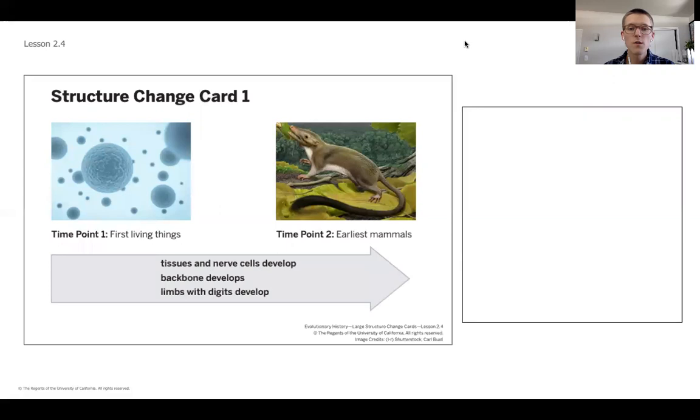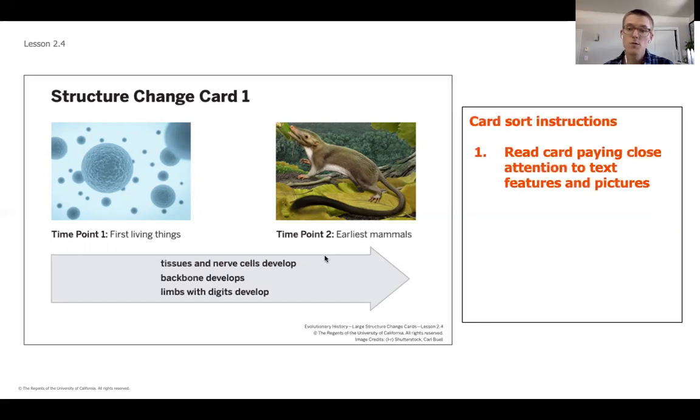This is the first card. So the first card says that we've got the first living things, earliest mammals, and then there's some other information on here. So for each of these cards, you're going to want to pause the video for each time you see one. And I will click through them here in a moment. And when you do that, you're going to want to first read through the card. Okay. Some of the cards are going to have more text. Some of them are going to have more text features or pictures. Both are going to be important in helping you to start to think about which of these changes would have taken the longest or the shortest period of time. We'll talk more about what that means in a second as we go through these instructions.